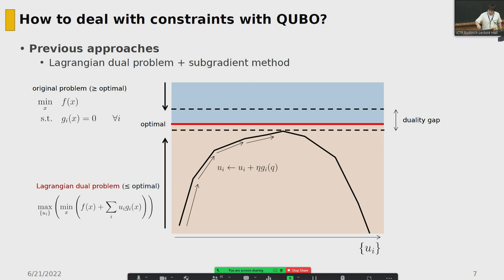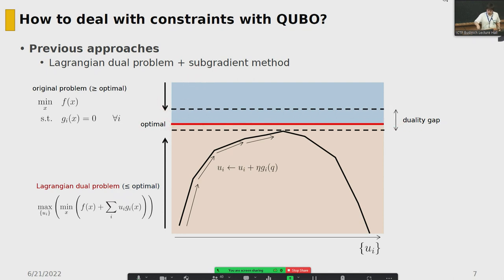Our aim is to first minimize the Lagrangian dual problem function, and then maximize it with respect to u_i. This lets us approach the optimal energy from bottom to top. The advantage of this method is that by repeating these two steps, we derive both an upper bound and a lower bound of the optimal solution — since the original problem always finds a solution above the optimal, and the Lagrangian dual problem finds one below. We can thus estimate the duality gap.